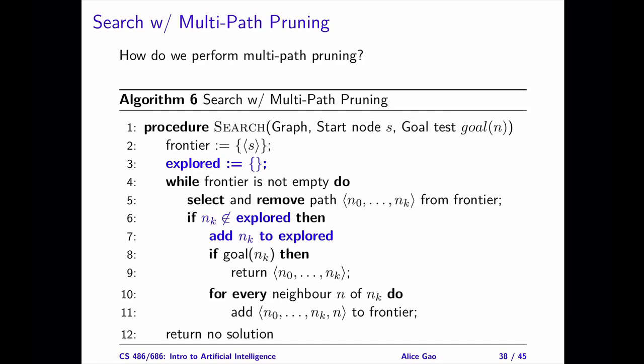We check whether n_k is in the explored set or not. If n_k was visited, we will do nothing. Otherwise, we will add n_k to the explored set and expand the node, which means performing the goal test and adding its successors to the frontier.